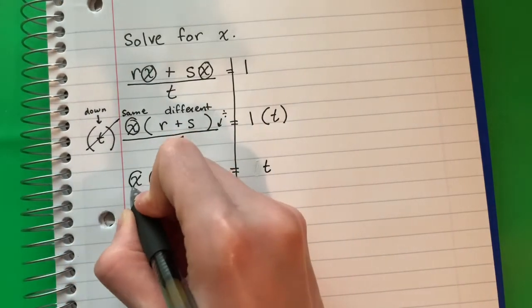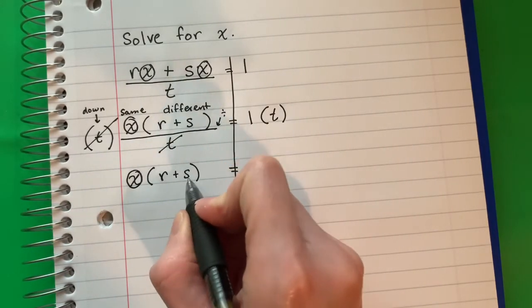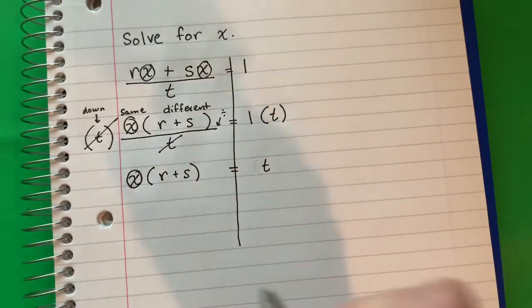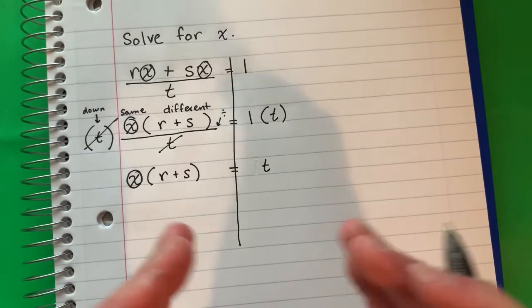So I want the x alone. What is with x? Que está con x? Parenthesis r plus s. They are together in a box. Están juntos en una caja de paréntesis. Okay, so they move together. Entonces ellos mueven juntos.